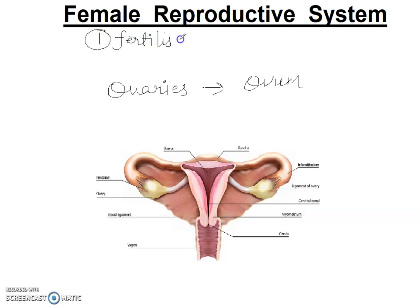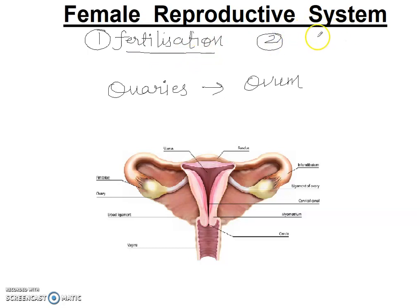The male reproductive system produces sperm. When sperm and ovum work together through fertilization, the result is the zygote. The other role is developing the embryo — embryo development up to birth.